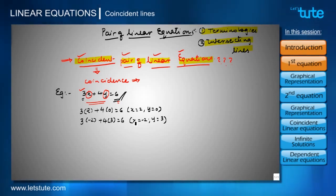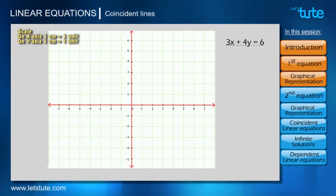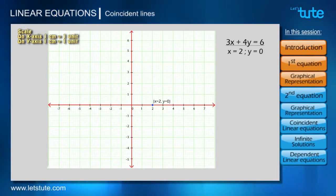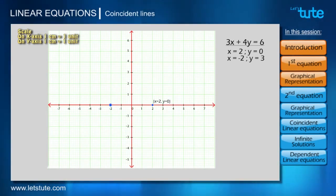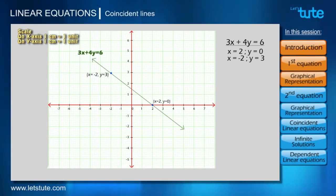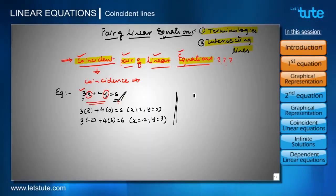Now let's plot these points on the graph for the equation 3x plus 4y equals 6. The first set is x=2, y=0 — since y is 0, this point lies on the x-axis. The second set is x=-2, y=3 — that point is on the negative side of the x-axis. Joining them gives us a straight line for the equation 3x plus 4y equals 6.